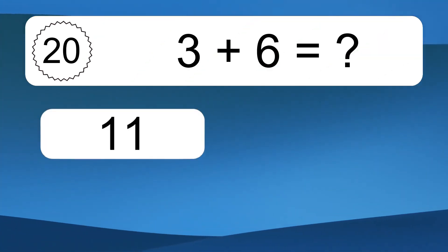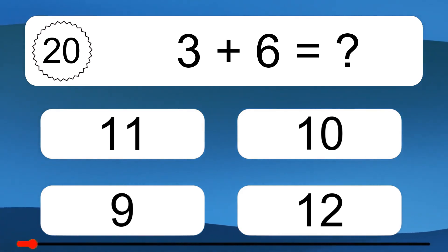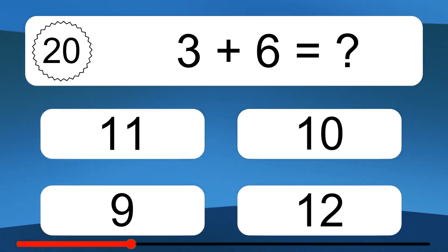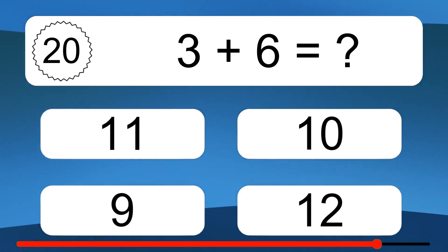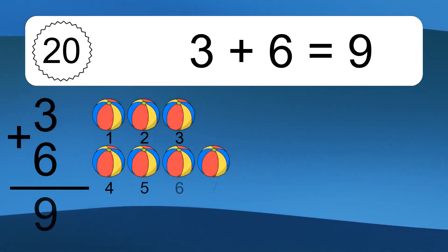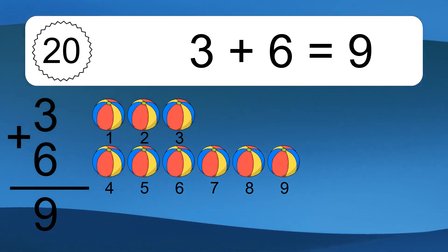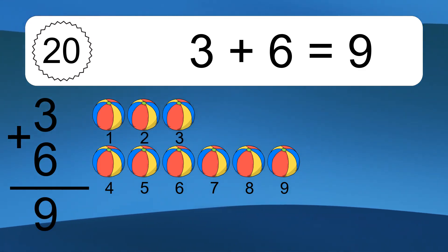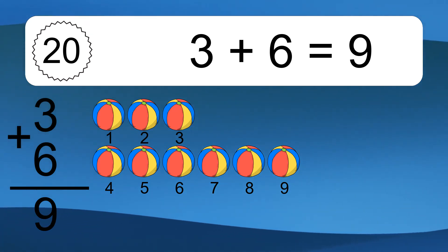3 plus 6 equals what? 3 plus 6 equals 9. Let's count it. 1, 2, 3, 4, 5, 6, 7, 8, 9.